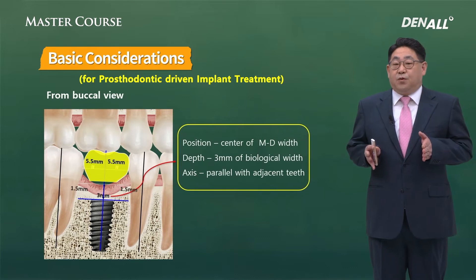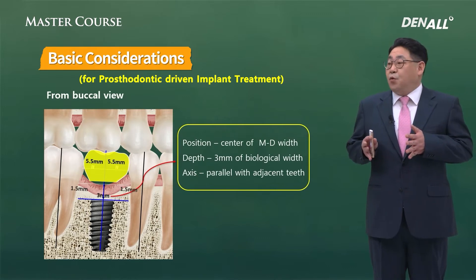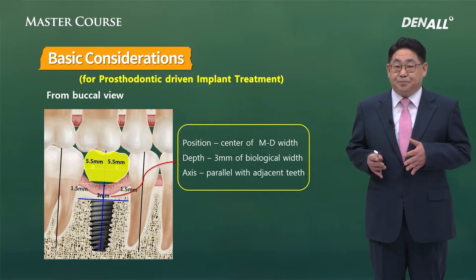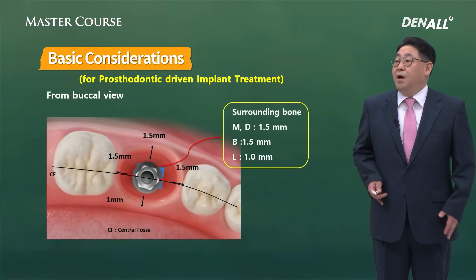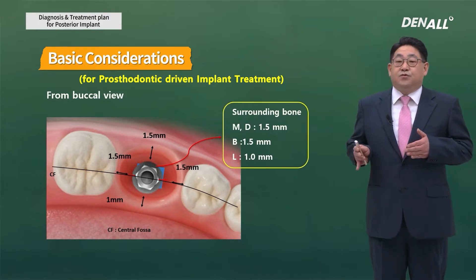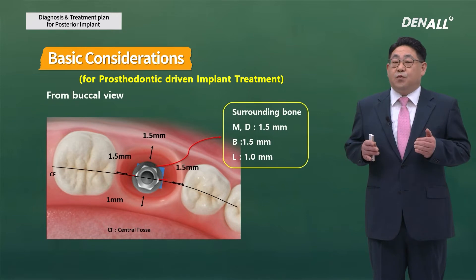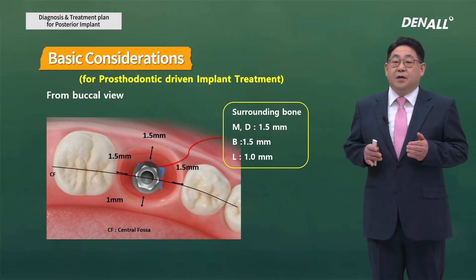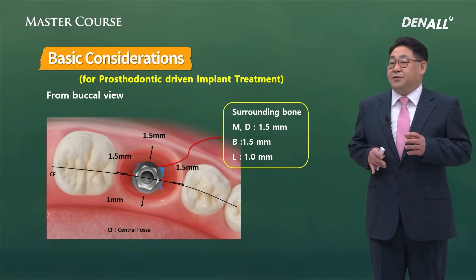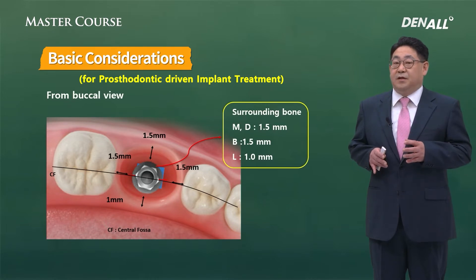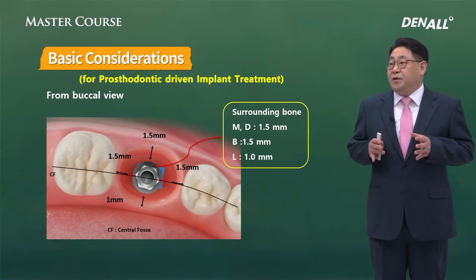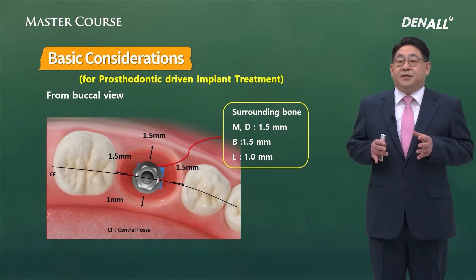Also, between the implant and the adjacent tooth, there needs to be at least 1.5 mm of bone in order to withstand voluntary bone resorption. From the occlusal view, the implant placement position should be in line with the central groove of adjacent teeth. On the buccal side, there needs to be at least over 1.5 mm of bone left. On the lingual or palatal side, if the bone width is over 1 mm, there will be no problems.